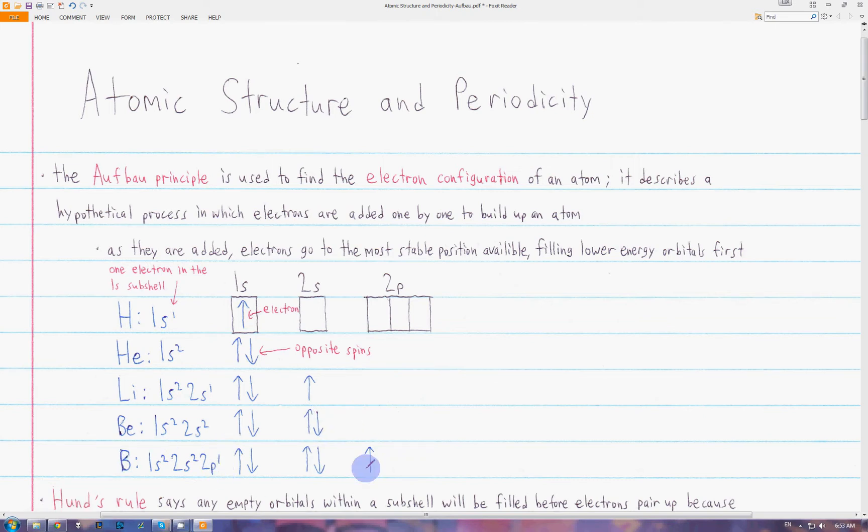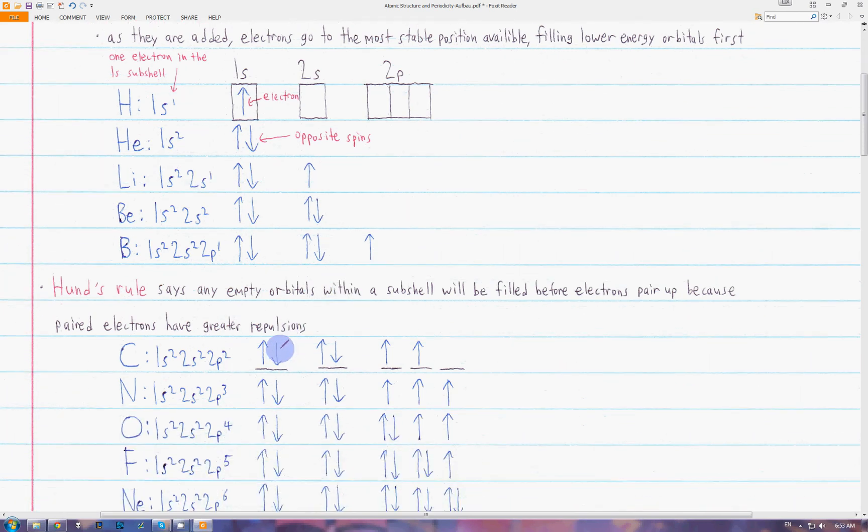In boron, since the 1s and 2s subshells already have two electrons in them, the last electron has to start occupying the 2p orbitals. Now we have something called Hund's rule, which says that any empty orbitals within a subshell will be filled before electrons pair up. Basically, electrons don't like to be paired up because if they're paired up, they're closer together and they have more repulsions.